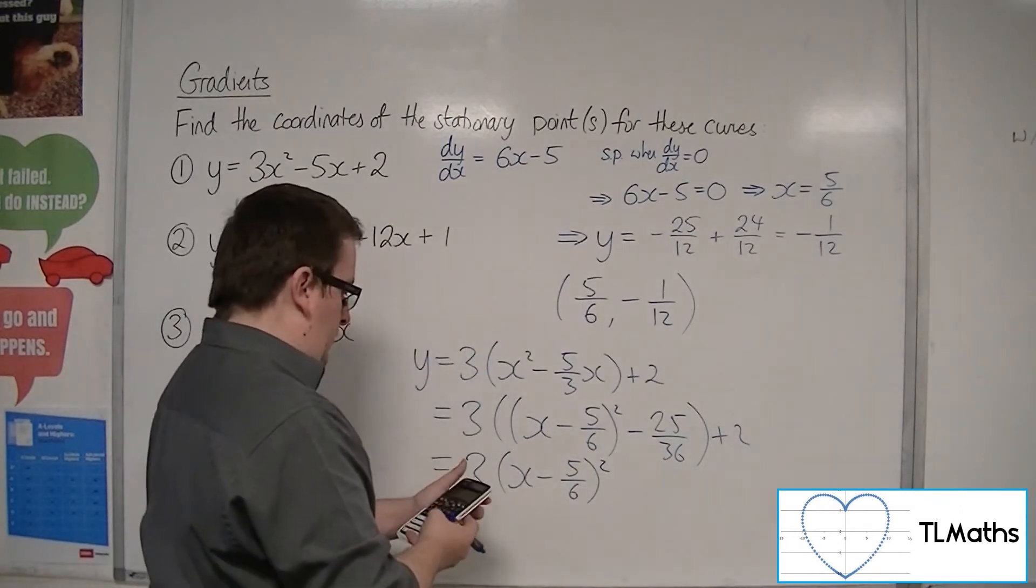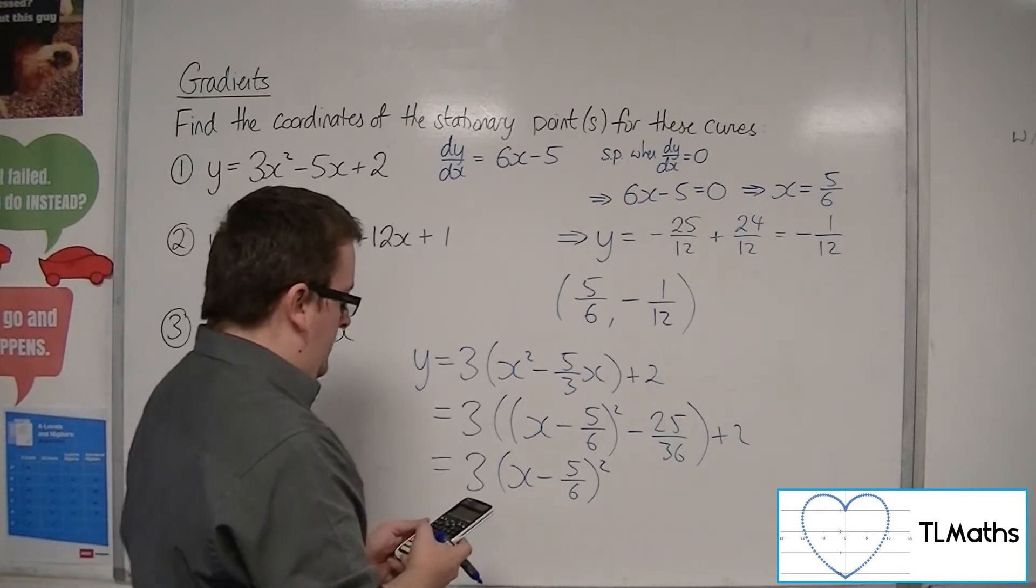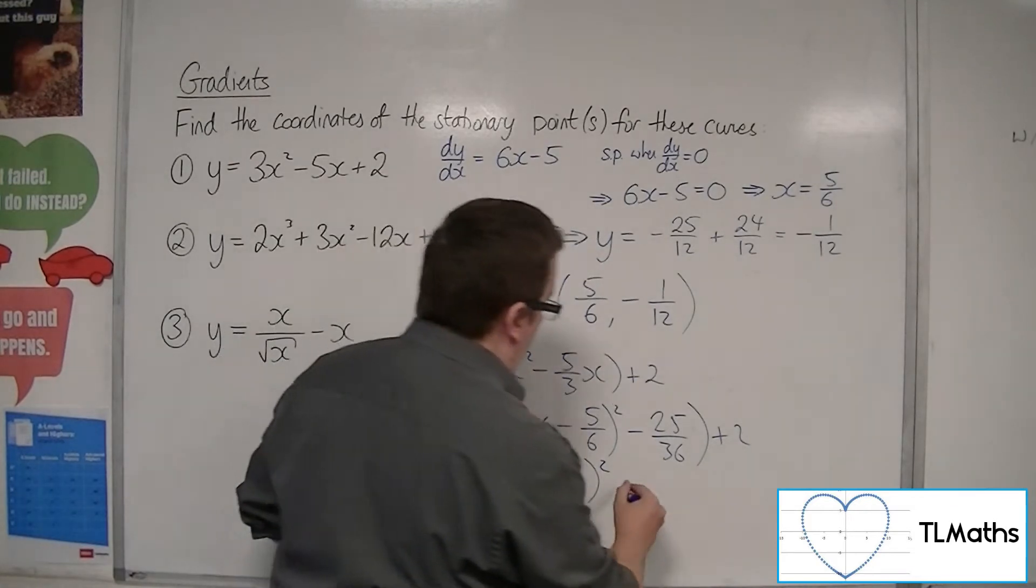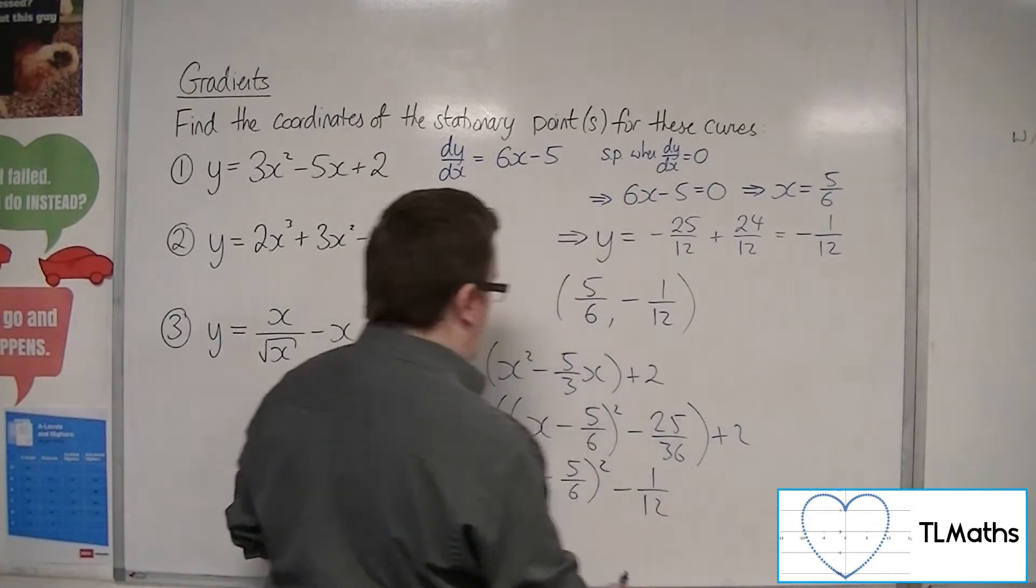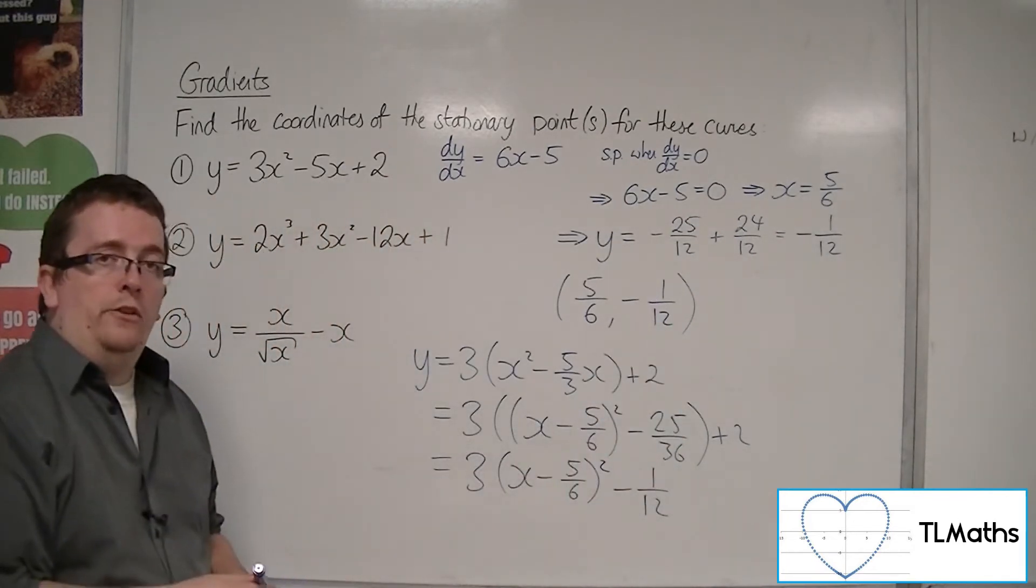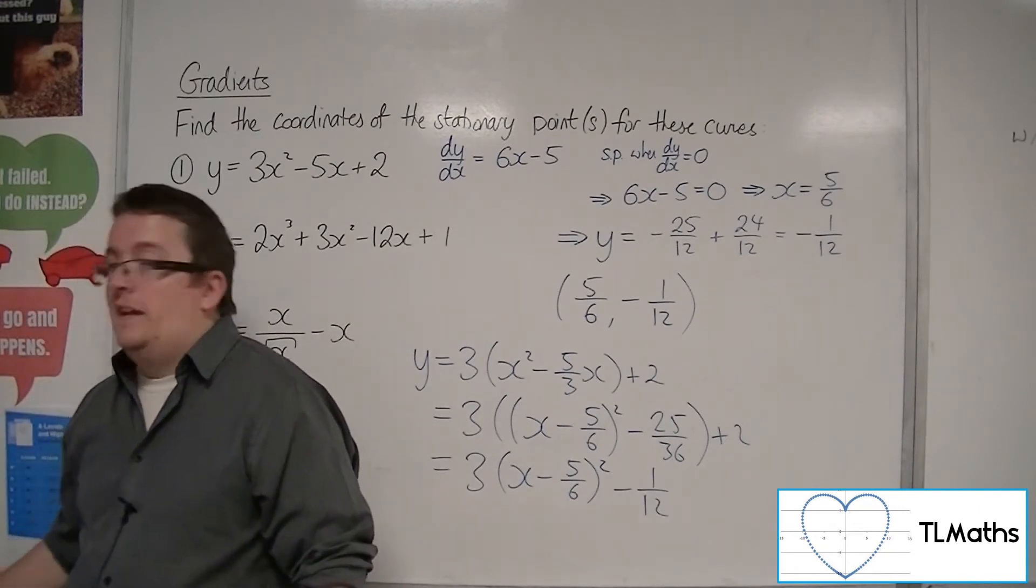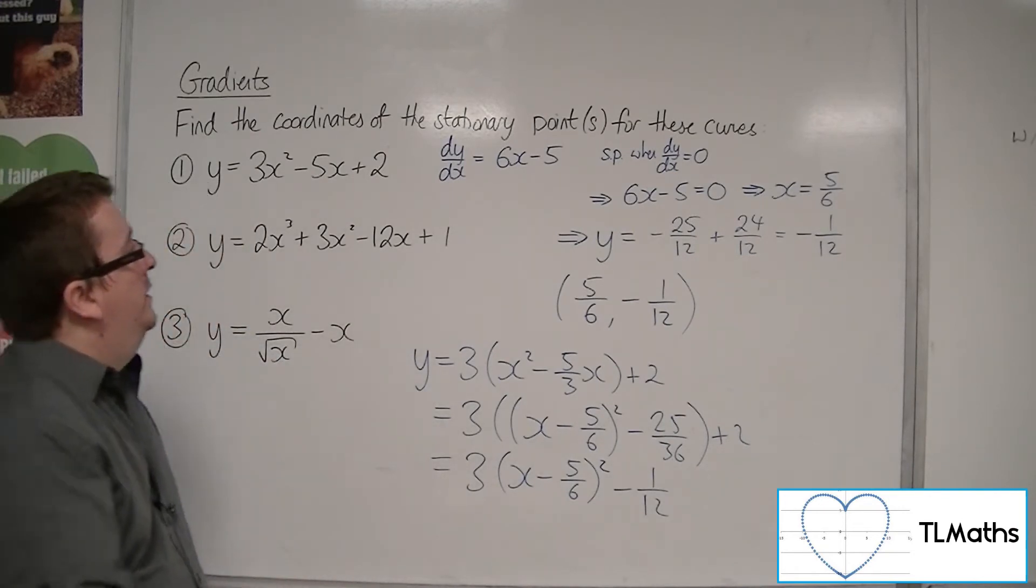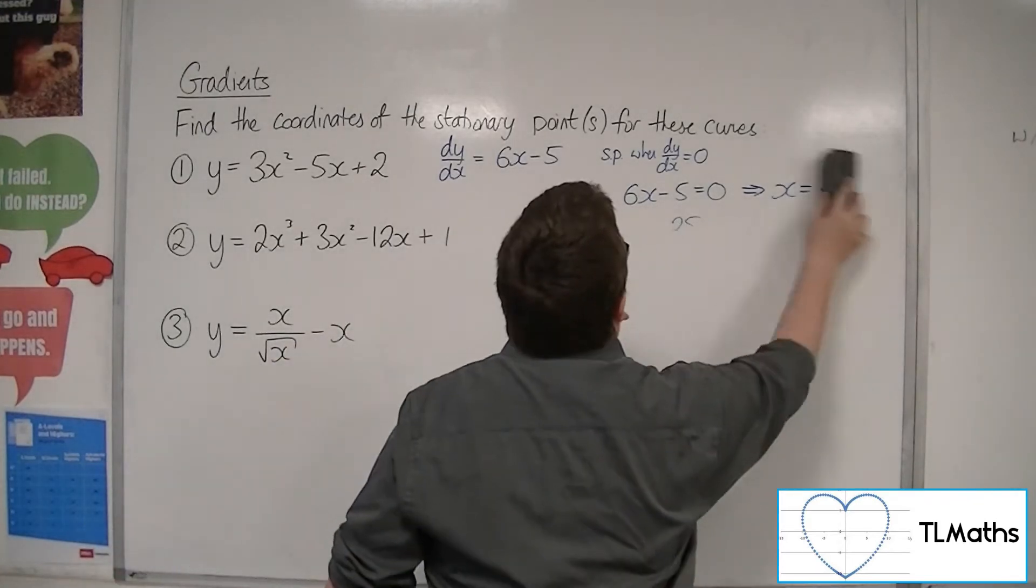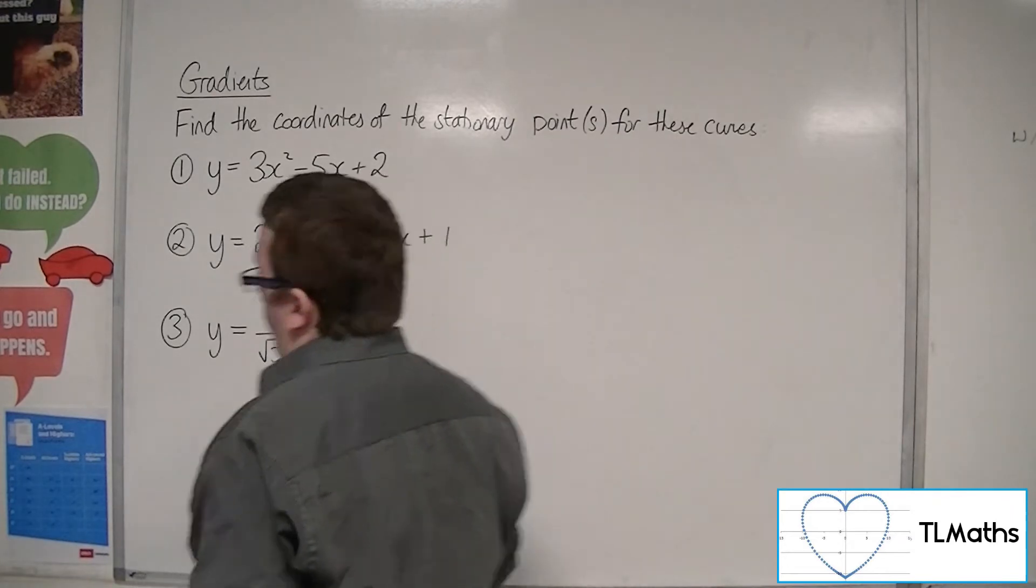So 3 lots of x minus 5 sixths squared. We get 3 lots of the minus 25 over 36, so minus 25 twelfths, plus the 2 is minus 1 twelfth. So we get the 5 sixths minus the twelfth, as we got before from completing the square. So it confirms the result, effectively, showing that our method has worked. So that's number 1.